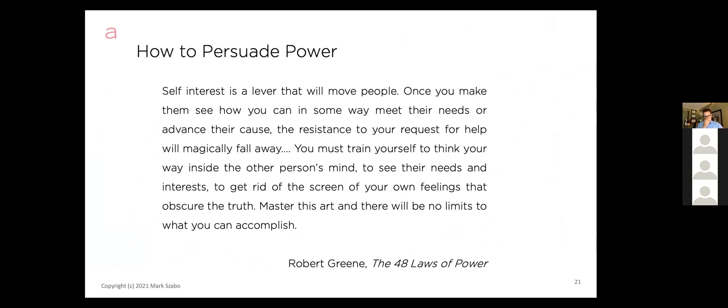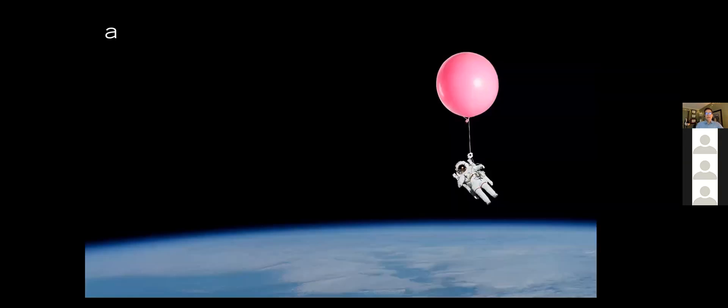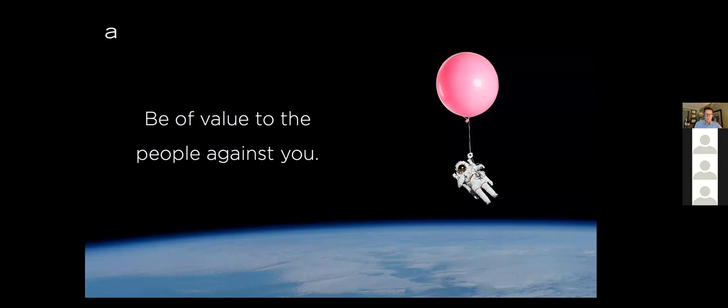Once you find the people with power, it's important to be able to persuade them. As Robert Greene writes in the 48 Laws of Power: 'Self-interest is a lever that will move people. Once you make them see how you can meet their needs or advance their cause, the resistance to your request will magically fall away. You must train yourself to think your way inside the other person's mind.' The key principle: be of value to the people against you. Once you find them, you need to be valuable to them.